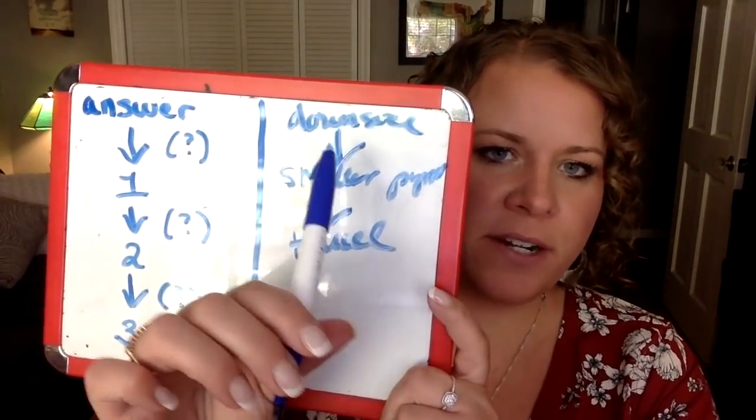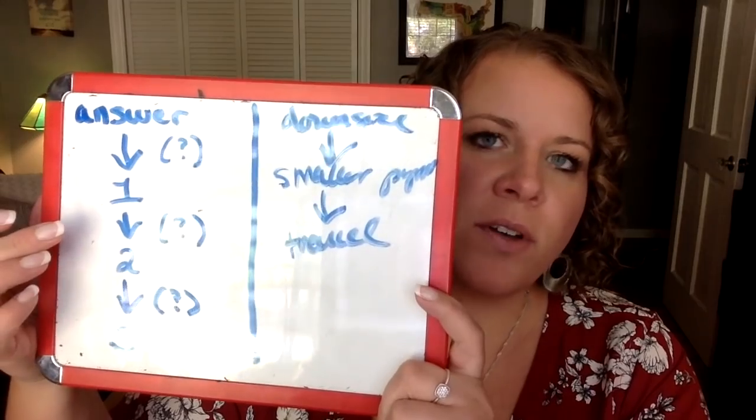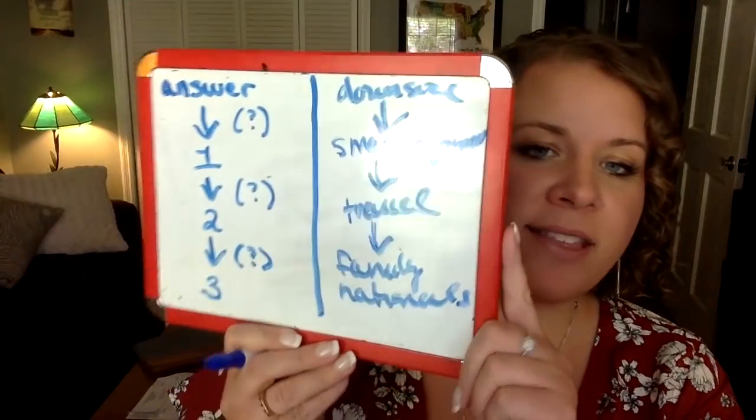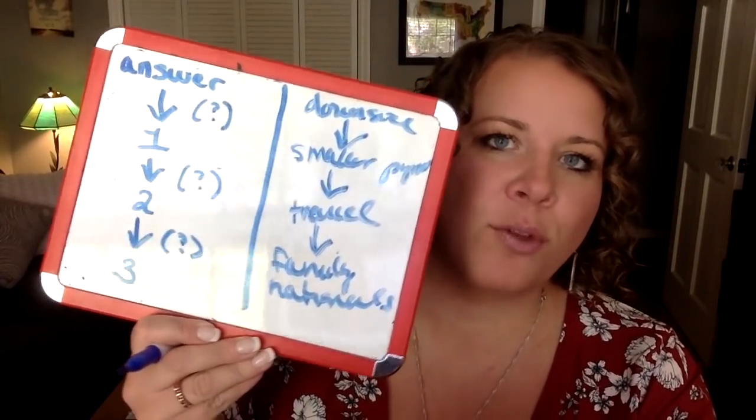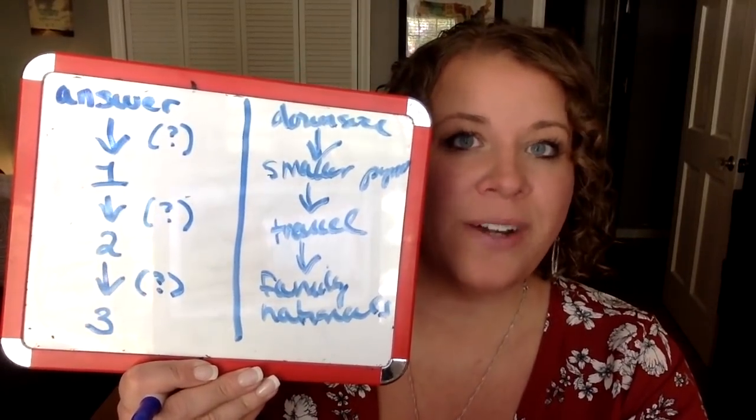Then I might say, what would a smaller payment do for you? And they might say, we'd have more money to travel. So I write down 'travel.' I've now asked two digging questions and have two arrows — that helps me stay on track. So I use the word 'travel' in my next question: where would you like to travel to, and how will that impact you? They might say, I want to travel to see my family and a bunch of national parks. At this point I have three arrows, meaning I've gone at least three deep.